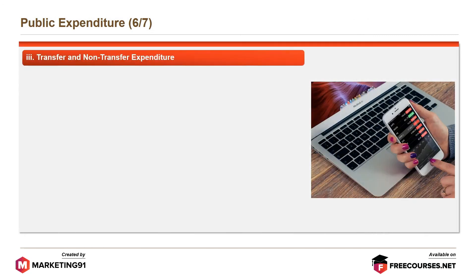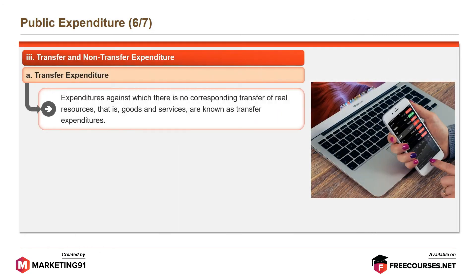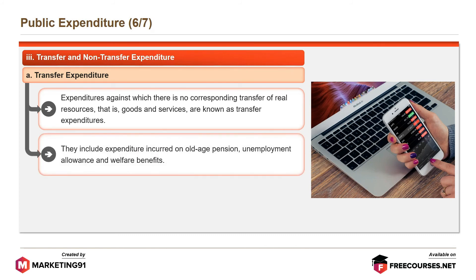Transfer expenditures are expenditures against which there is no corresponding transfer of real resources — that is, goods and services. They include expenditure incurred on old age pension, unemployment allowance, and welfare benefits. The result of this type of expenditure is the redistribution of money incomes within the community.